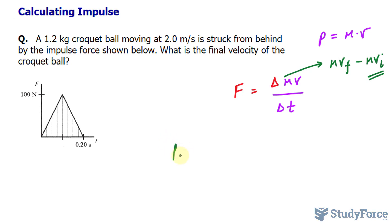The momentum initially is equal to the mass of 1.2 kilograms multiplied by the velocity of 2.0 meters per second. Multiplying this out, we get 2.4 kilograms times meters per second.